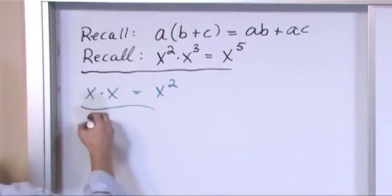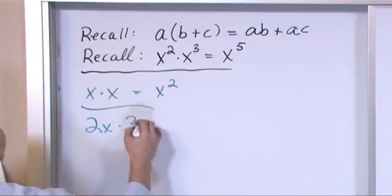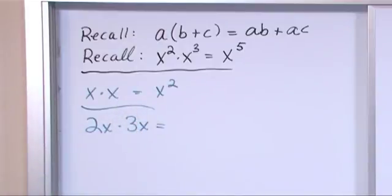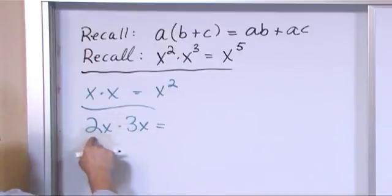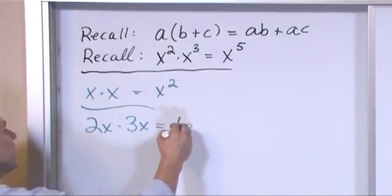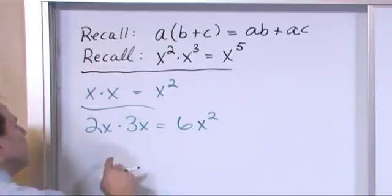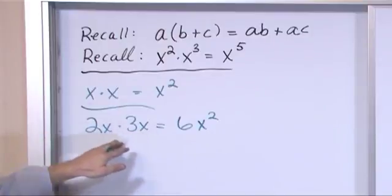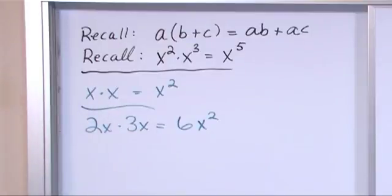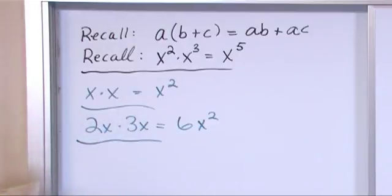Now let me give you something a little more interesting. What if I had 2x times 3x? The way you do this is when you have everything multiplied together like this, you multiply the numbers — so you get six. Then x times x gives you x squared. So basically you're multiplying the numbers independently of multiplying the variables.